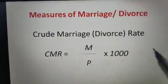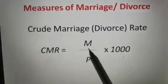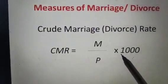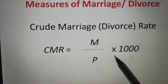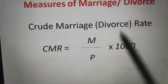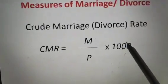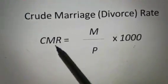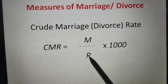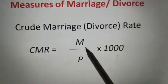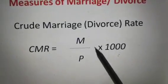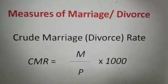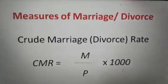Now let us talk about the various measures. When you have to deal with any table and a question asks you to calculate the marriage or divorce rate, first there is the Crude Marriage Rate (CMR) or Crude Divorce Rate (CDR). The same formula applies to both — only the terminology M and D will change. CMR = M / P × 1000, that is total marriages divided by total population multiplied by 1000. If you change M to D, then CDR = D / P × 1000.